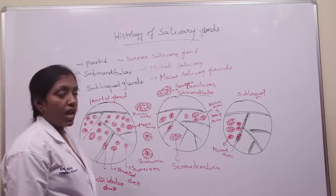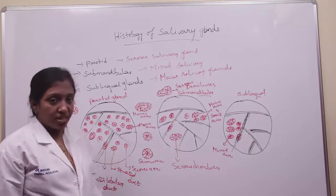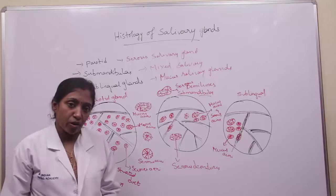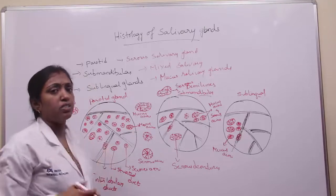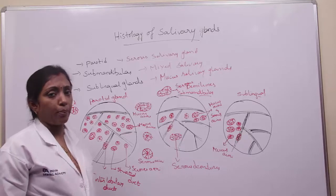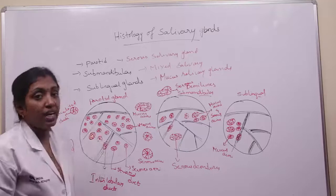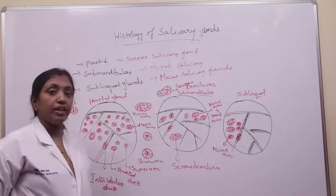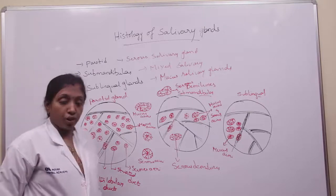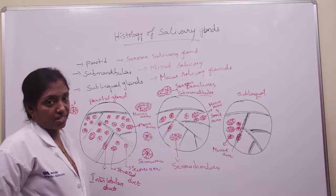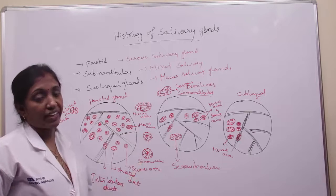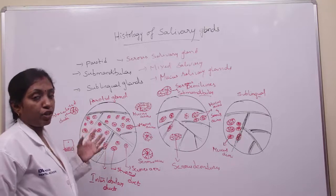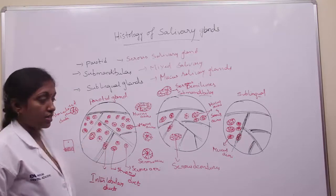Along with the serous acini, very few mucous acini are also seen — that's why all three salivary glands are called heterocrine glands, because they consist of both serous acini and mucous acini. In the parotid gland, serous acini are more dominant. Along with the serous acini you will see intercalated ducts lined by cuboidal epithelium, and secretions from the intercalated ducts pour into striated ducts lined by columnar epithelium with basal striations, which then pour into interlobular ducts lined by simple columnar epithelium.